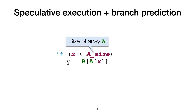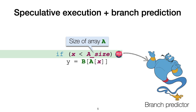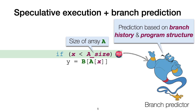Consider this simple program. Here we check if x is inbound, and if that's the case, we perform two memory accesses. Executing the branch instruction requires comparing x and size. Instead of waiting for the result of the comparison to be available, the CPU queries a component called the branch predictor, which predicts the outcome of the comparison. Concretely, the prediction is based on the branch history and on the program structure.